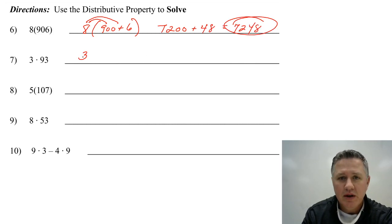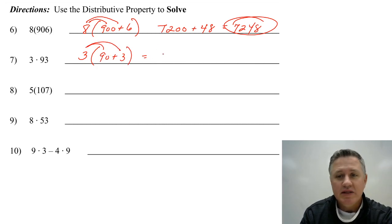So we're going to split 93 into 90 plus 3 using the distributive property, making that problem into two easier problems. 3 times 90 is 270. 3 times 3 is 9. So you get 279.